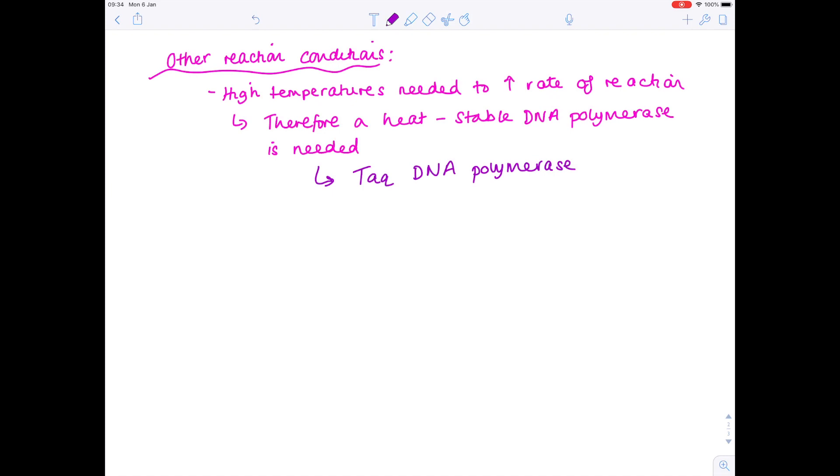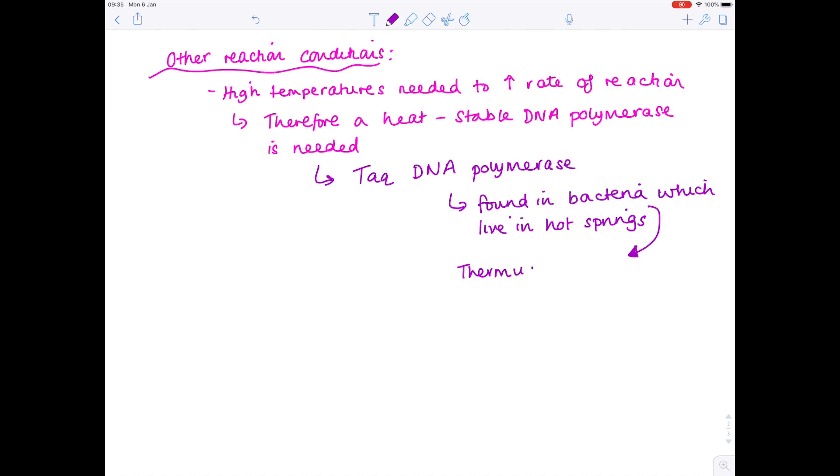And where do we find this TAC DNA polymerase? Well, we find it in a bacterium which is adapted to living in hot springs, which is known as Thermus aquaticus. Because it makes sense. If you're a bacteria which is living in a hot spring where the temperatures can reach 100 degrees, then clearly you're going to have to have enzymes which do not denature because obviously the bacteria would die once those enzymes have been denatured. So the TAC DNA polymerase found in these bacteria are therefore suitable for the PCR because it is heat stable.